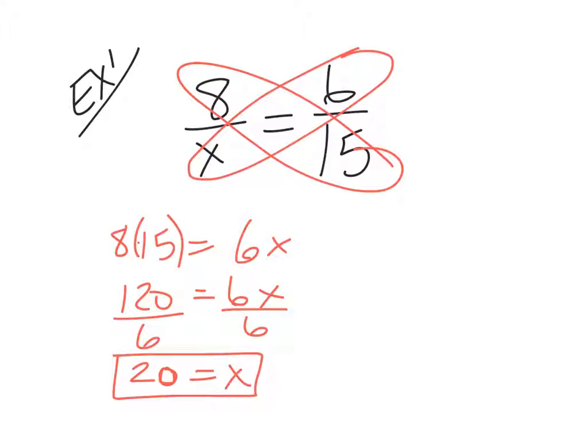So I'll go over it one more time. So we did cross product. So we did 8 times 15. And then we have 6 times x, which is 6x. And then we simplified 8 times 15, which is 120. And then to get the x by itself, we divided both sides by 6. So the x is by itself because these cancel. And I'm left with x equals 20.